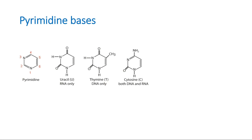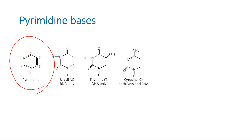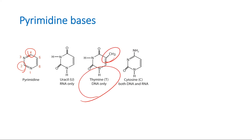Pyrimidine — the name is big but the ring is small, just a six-membered ring. Uracil is 2,4-dioxopyrimidine. Thymine is nothing but 5-methyluracil. If you put a methyl group in the fifth position of uracil, you get thymine.